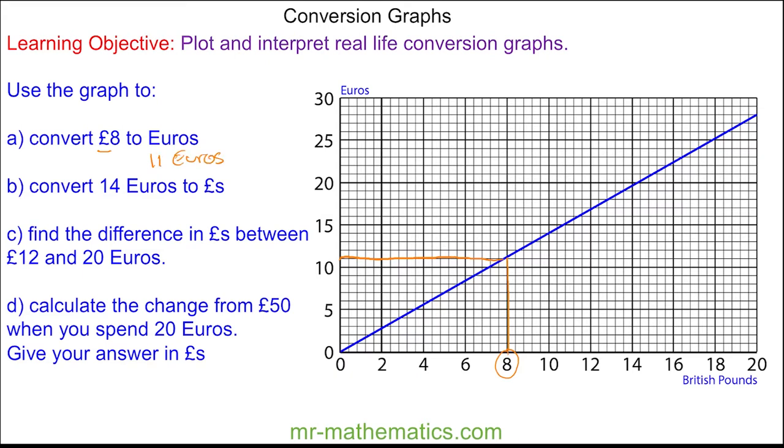Now we'll convert 14 Euros into Pounds. This time we'll go across 14 to the blue line and then go down to the British Pounds axis. You can see 14 Euros is approximately 10 pounds.